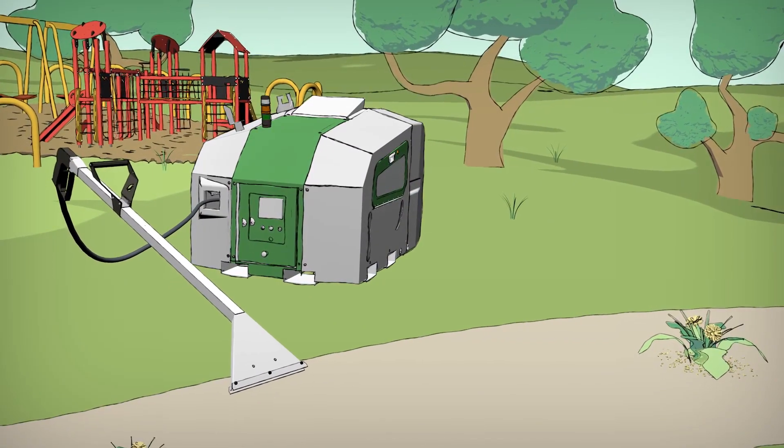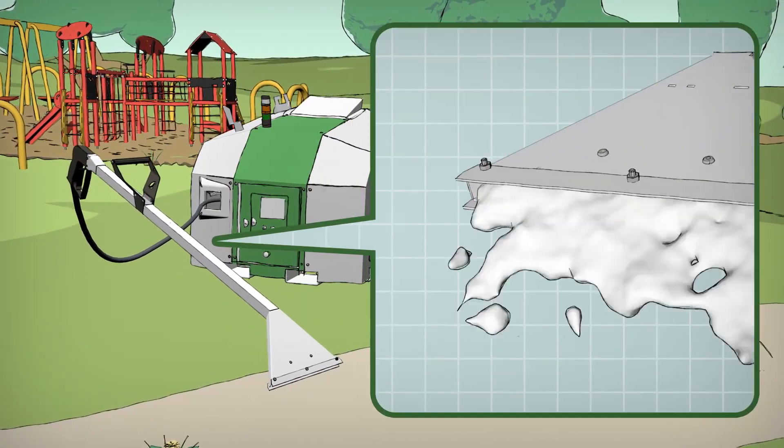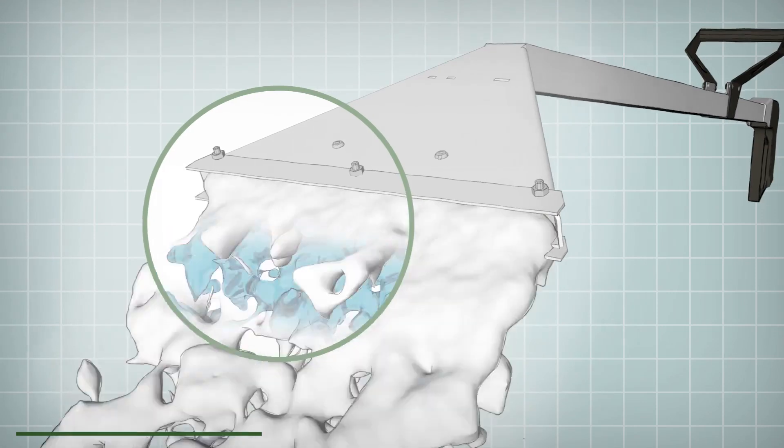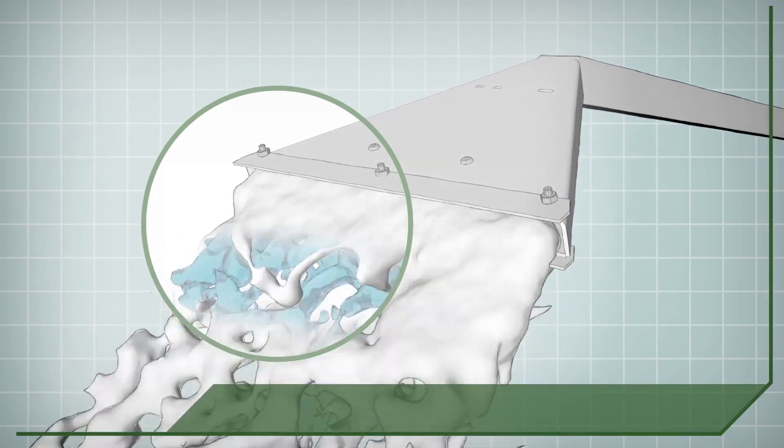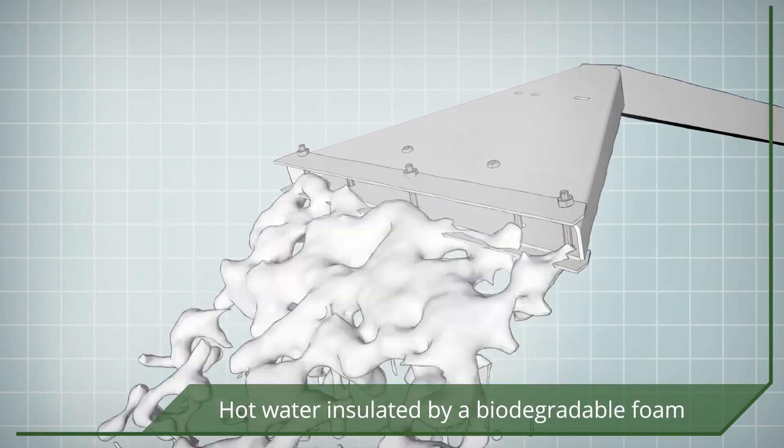Weeding Tech systems kill unwanted vegetation using heat. The heat is delivered in hot water, insulated by our carefully formulated, natural and biodegradable foam, Foamstream.